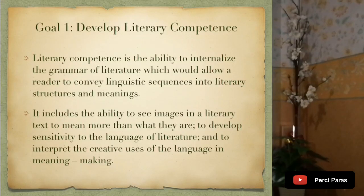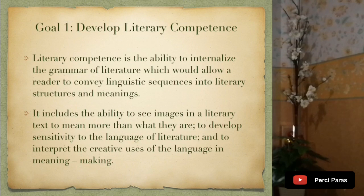Now that we've talked about the nature, let's proceed to the different goals of teaching literature. Why are we teaching literature? The first goal is to develop literary competence — the ability to internalize the grammar of literature, which permits a reader to convey linguistic sequences into literary structures and meaning. It includes the ability to see images in a literary text as meaning more than what they are, to develop sensitivity to the language of literature, and to interpret the creative uses of language in meaning making.